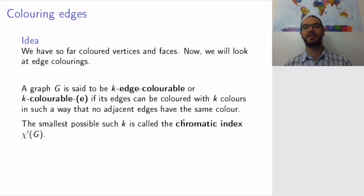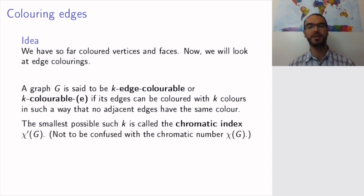So the smallest possible number of colors that you can use is called the chromatic index and is denoted by χ'(G). Notice this prime here and do not confuse this with the chromatic number χ(G) which is the same concept but for coloring the vertices rather than the edges.